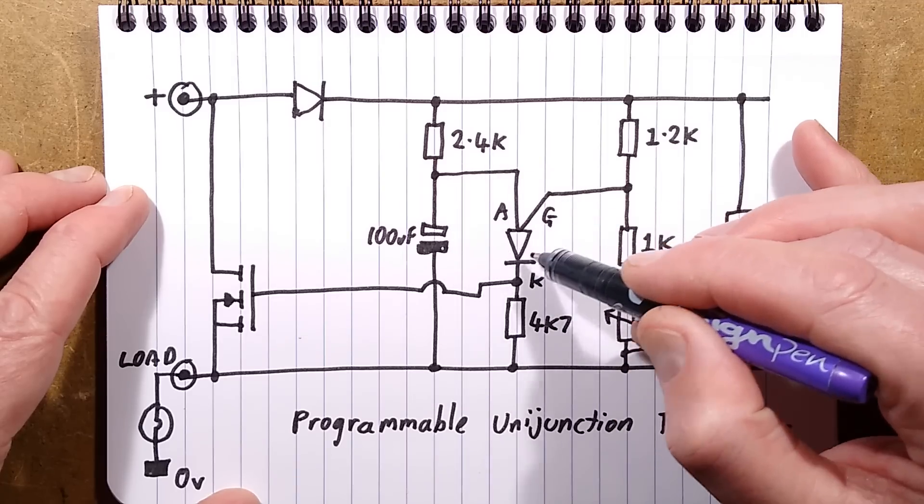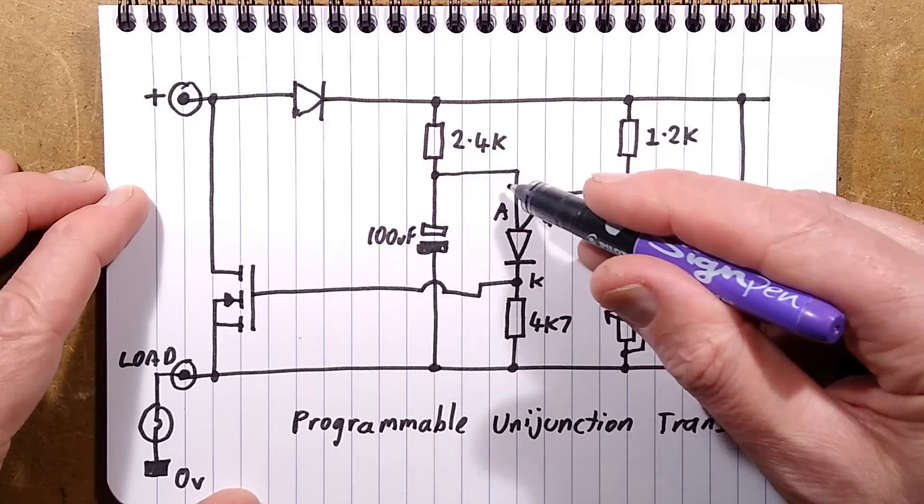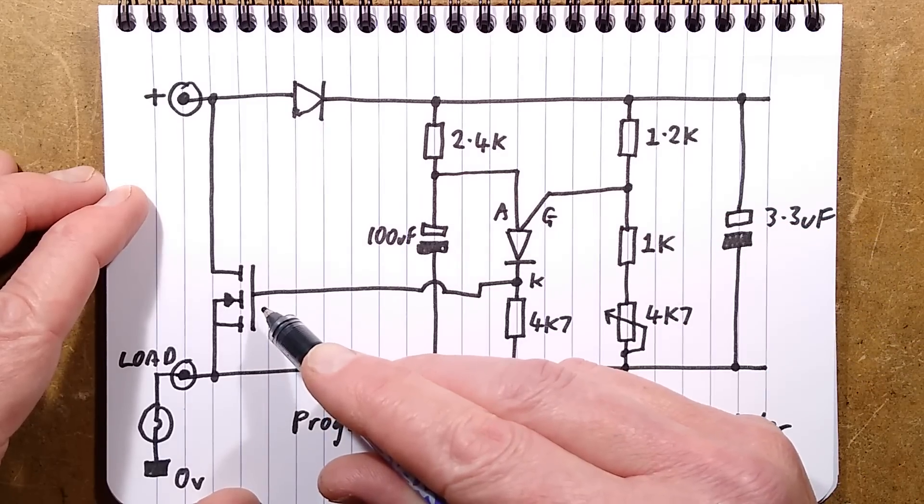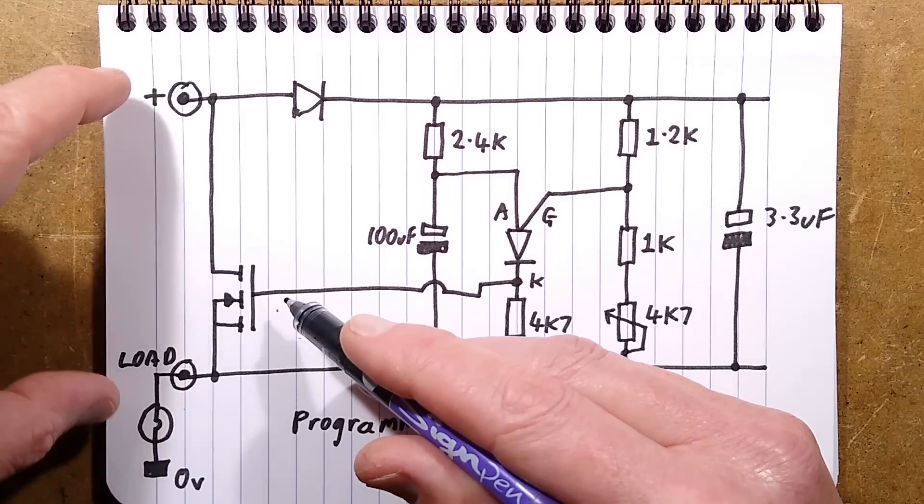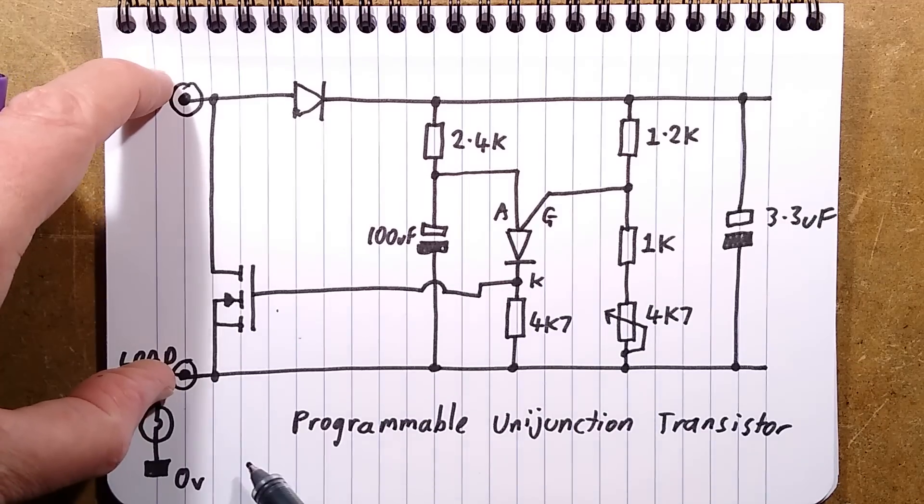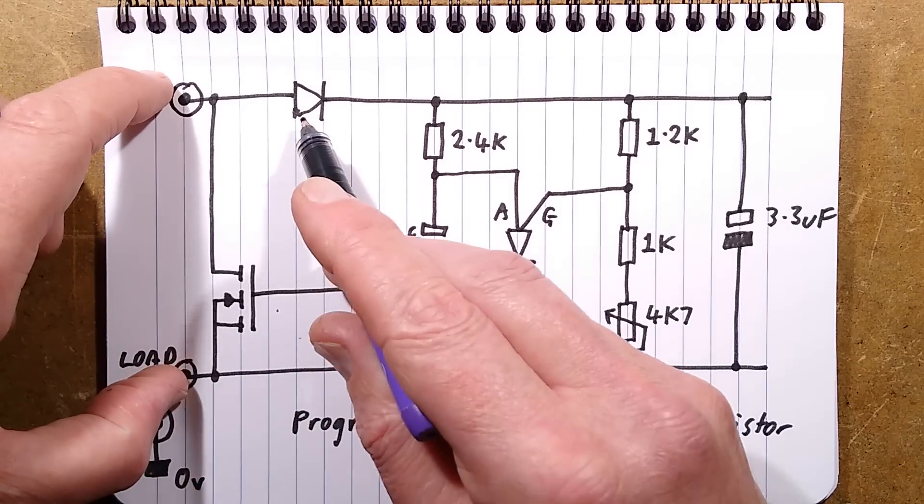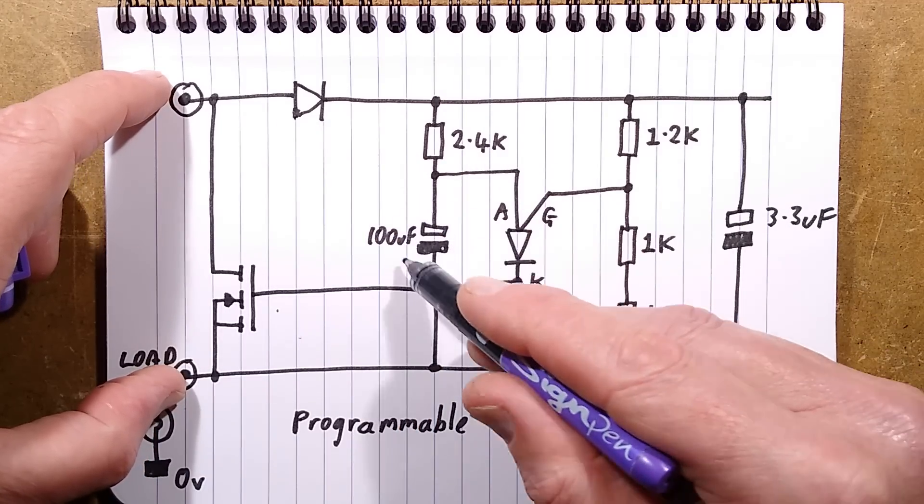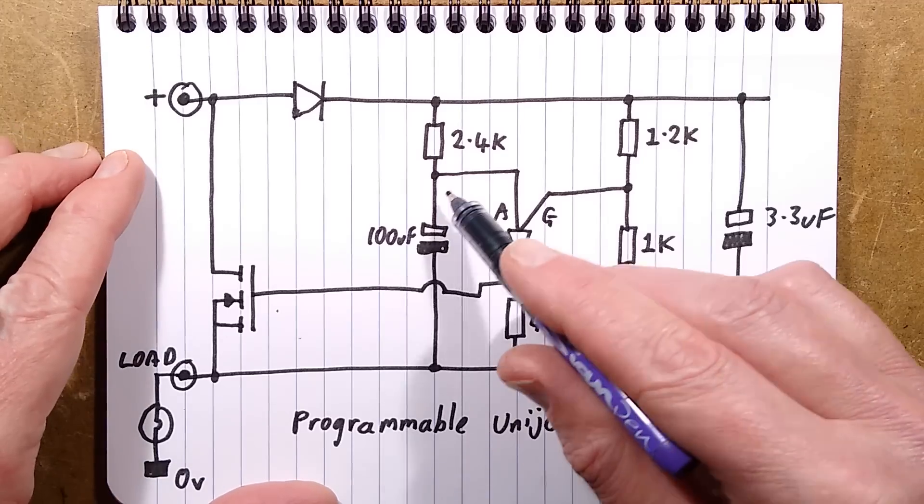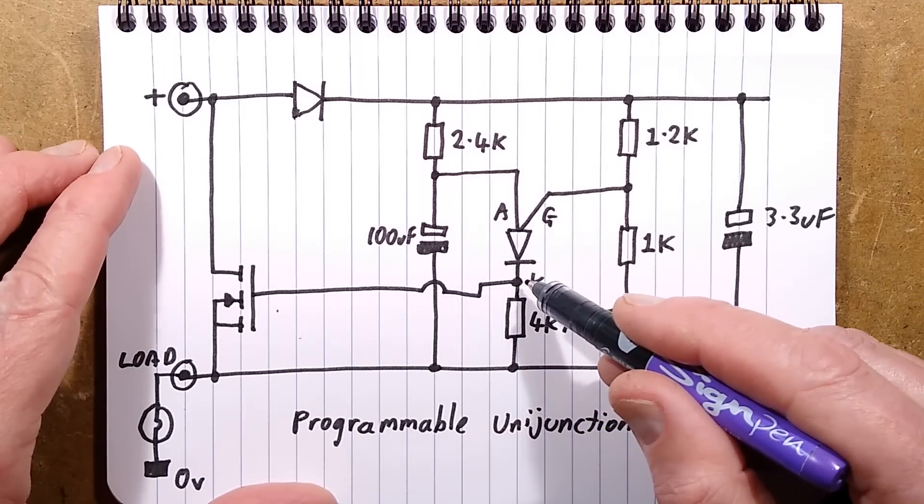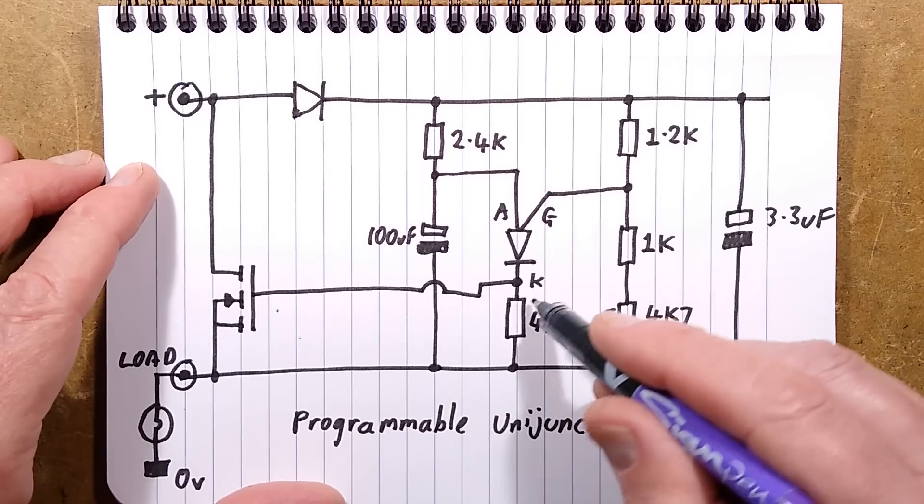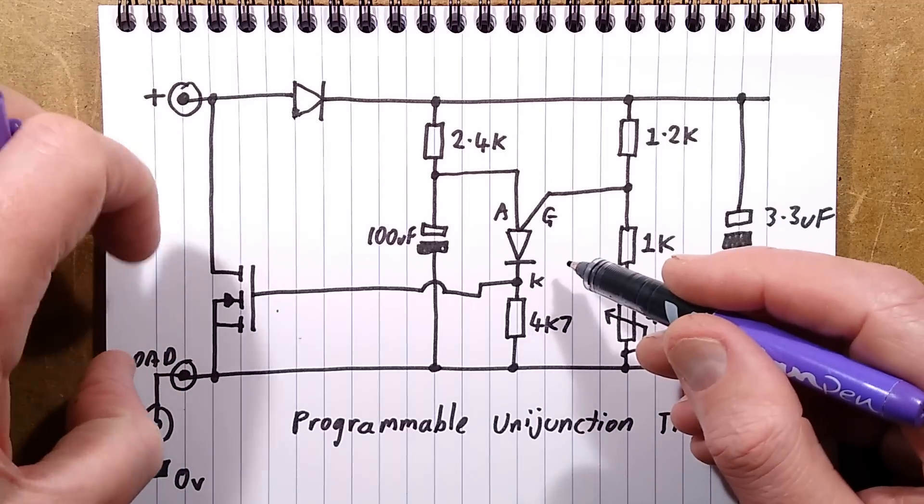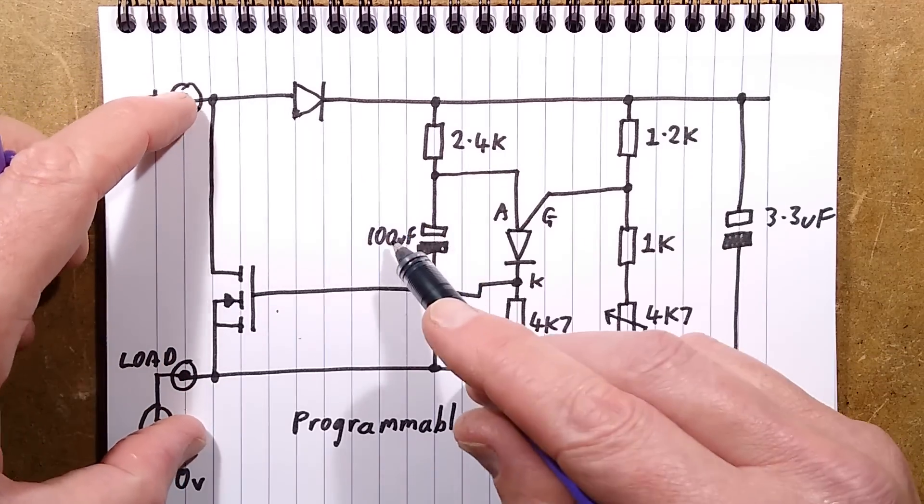That then starts dumping the current from this capacitor down through this resistor, but in doing so raises the voltage of the MOSFET to the point it turns on. When it does turn on, it shunts the positive and the load, bringing on the lamp. At that point, no more current flows through this diode, but it doesn't matter because this capacitor is now running the show. It's continuing to discharge through the programmable unijunction transistor until the current goes so low through this resistor that it cuts off. When it does cut off, then the MOSFET turns off and that capacitor starts charging up again.